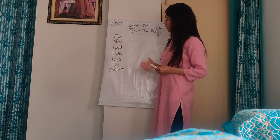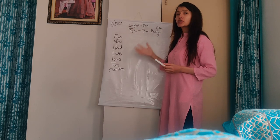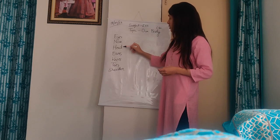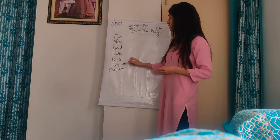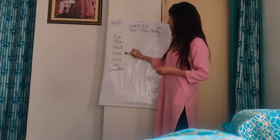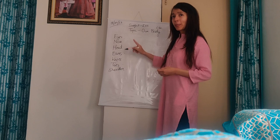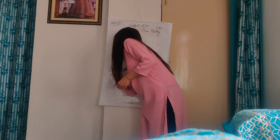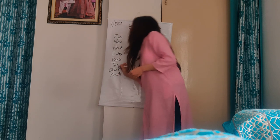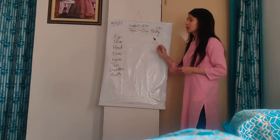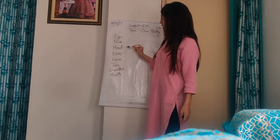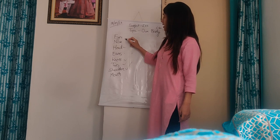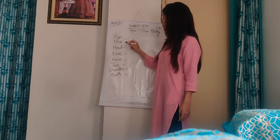Let's read the different body parts according to the poem and check whether we have covered all the body parts or not. Head. Shoulders. Knees. Toes. Eyes. Ears. So, which part is missing? Very good. Mouth. M-O-U-T-H. Mouth. Now let's check — have we covered all the body parts? Head, Shoulders, Knees, Toes, Eyes, Ears, Mouth, Nose. Yes.